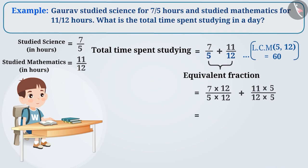Now we get the equivalent fraction of 7/5 as 84/60 and 11/12 as 55/60. Since the denominators are equal, we add the numerator 84 with the numerator 55 and keep the denominator as it is.